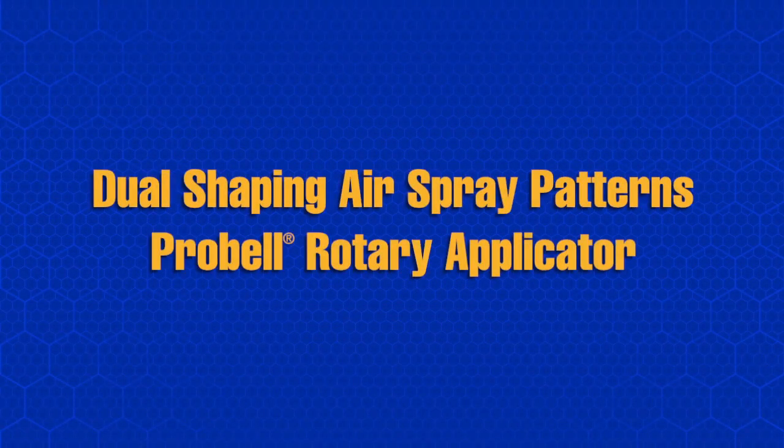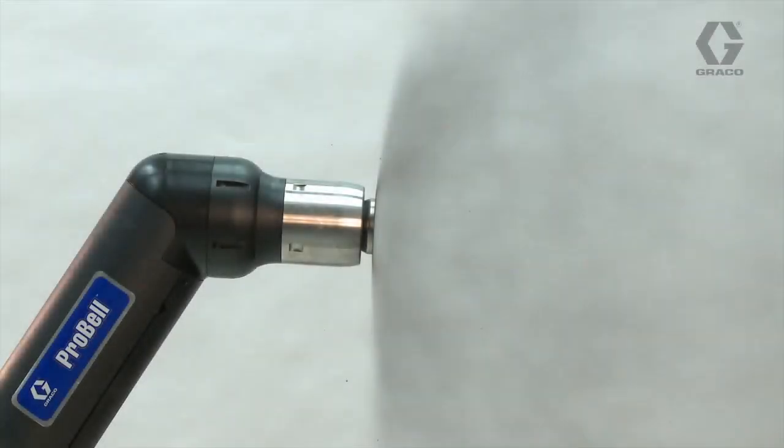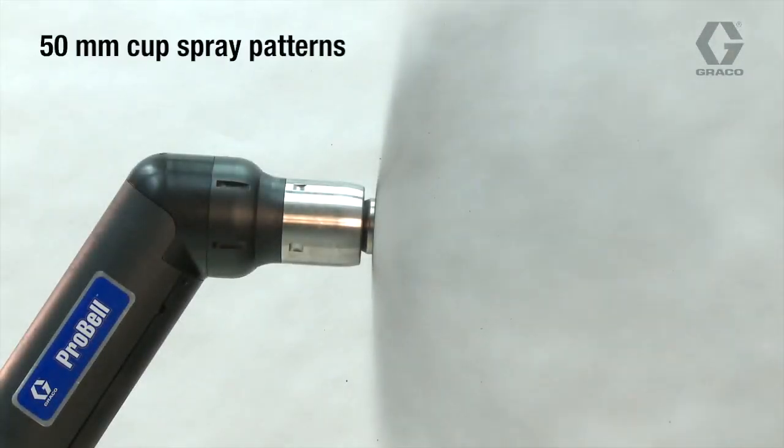Dual Shaping Air Patterns with the Graco ProBell Rotary Applicator. This video shows how shaping air affects spray patterns through a 50mm serrated aluminum cup on a ProBell Rotary Applicator.